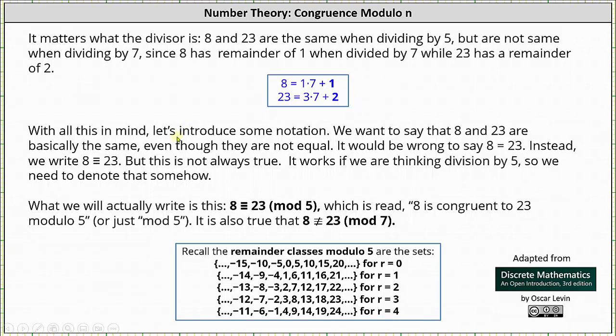With all this in mind let's introduce some notation. We want to say that eight and 23 are basically the same even though they are not equal. It would be wrong to say eight equals 23. Instead we write eight is congruent to 23, but this is not always true. It works if we are thinking about division by five, so we need to denote that somehow. What we actually write is this: eight is congruent to 23 mod five, or eight is congruent to 23 modulo five.